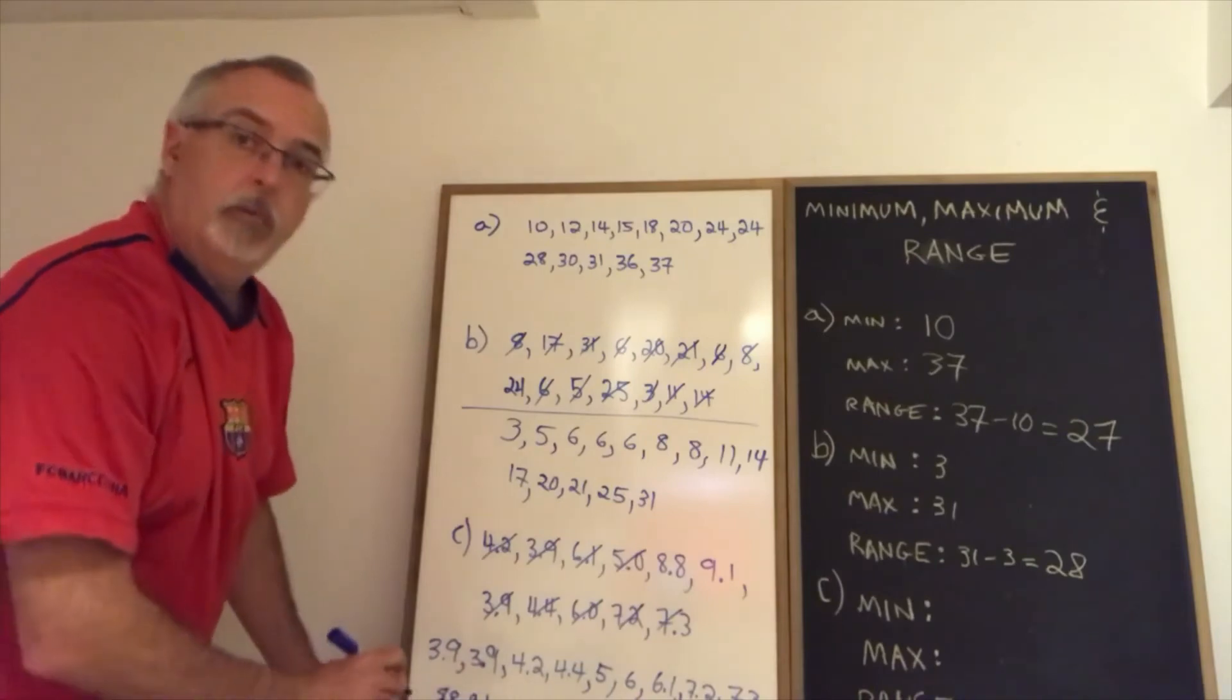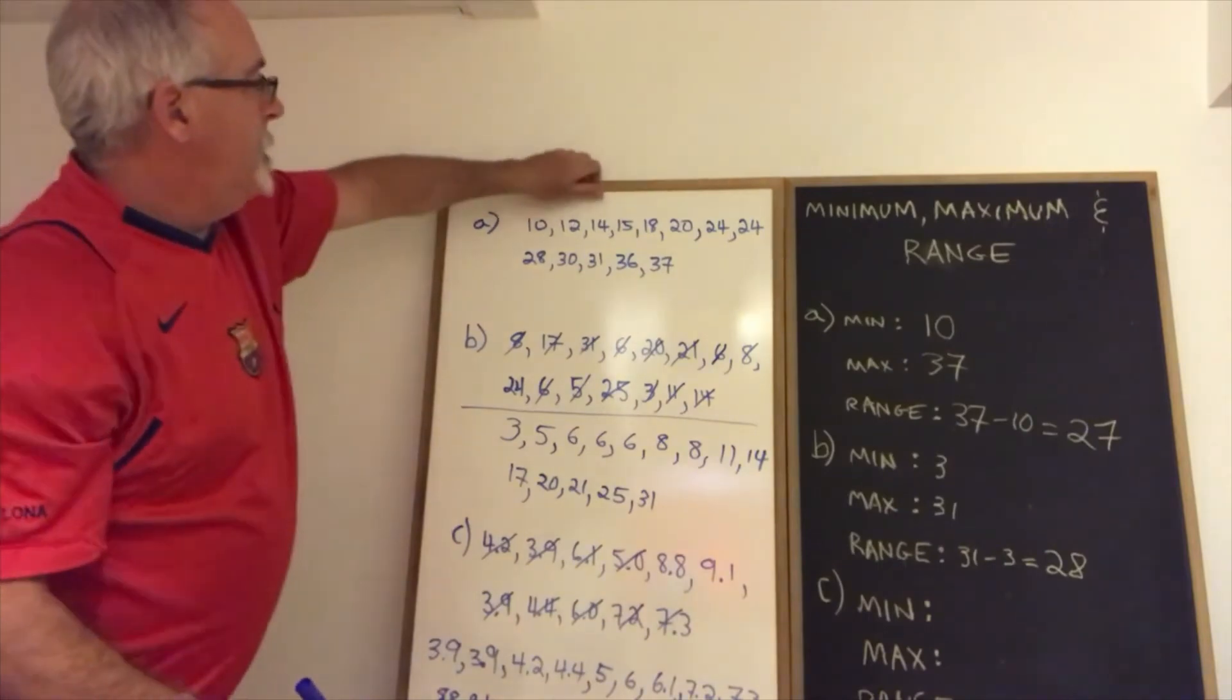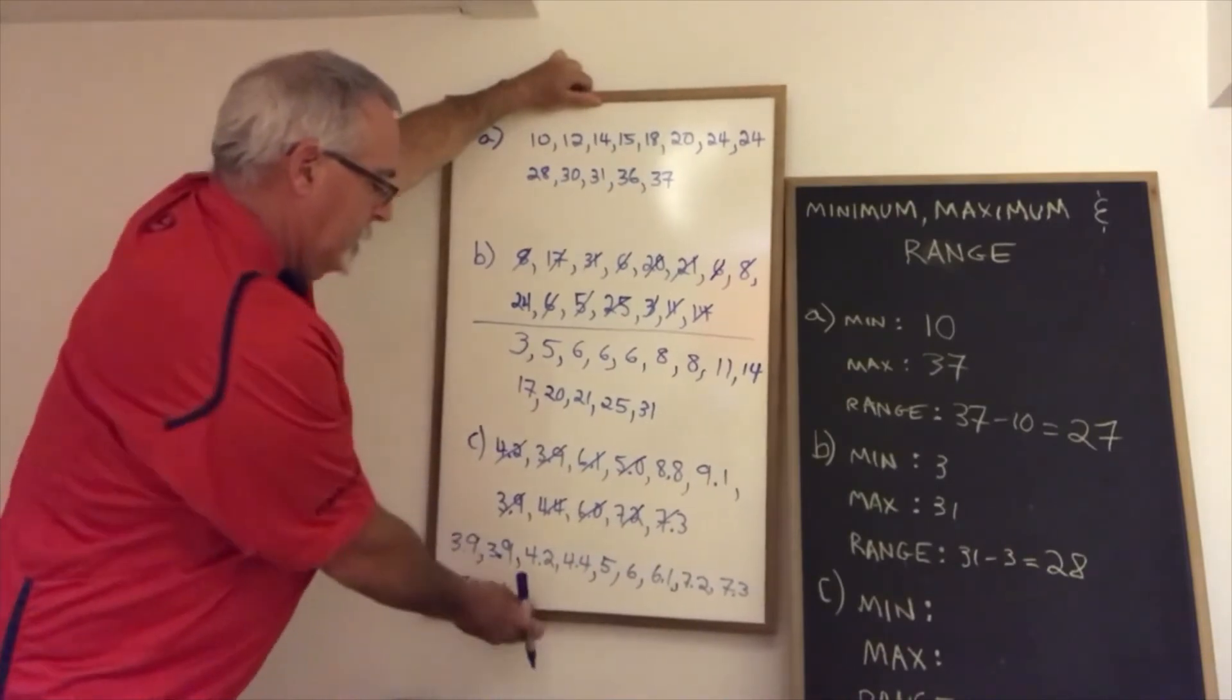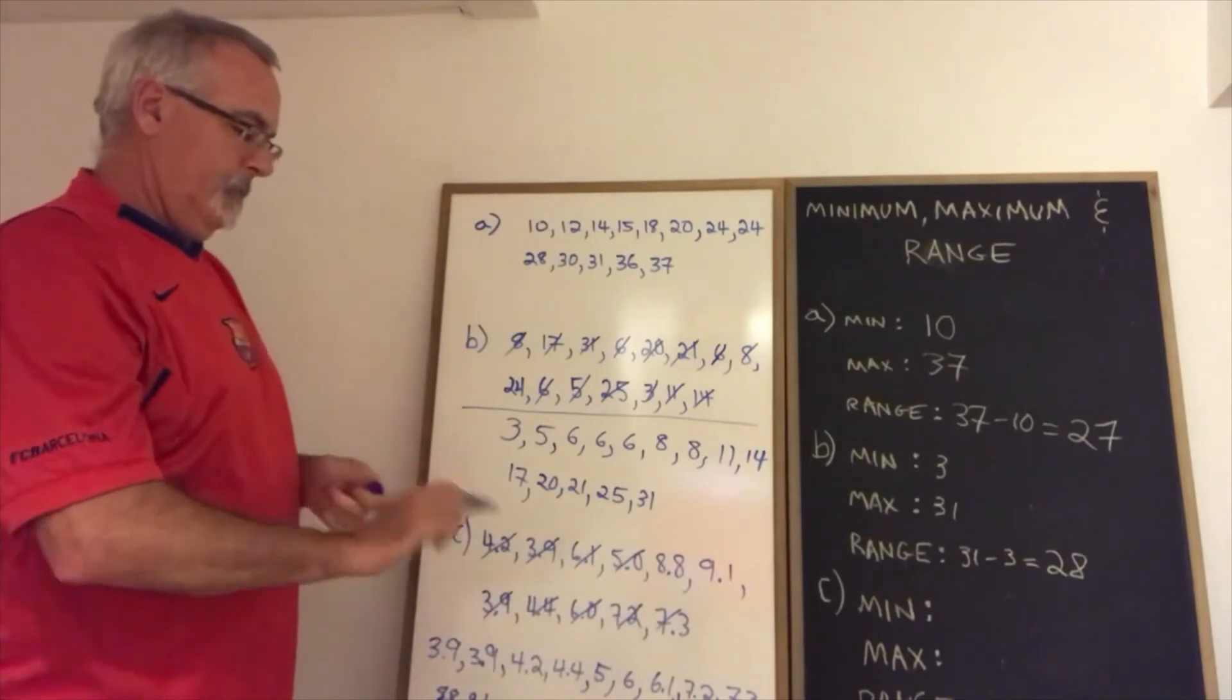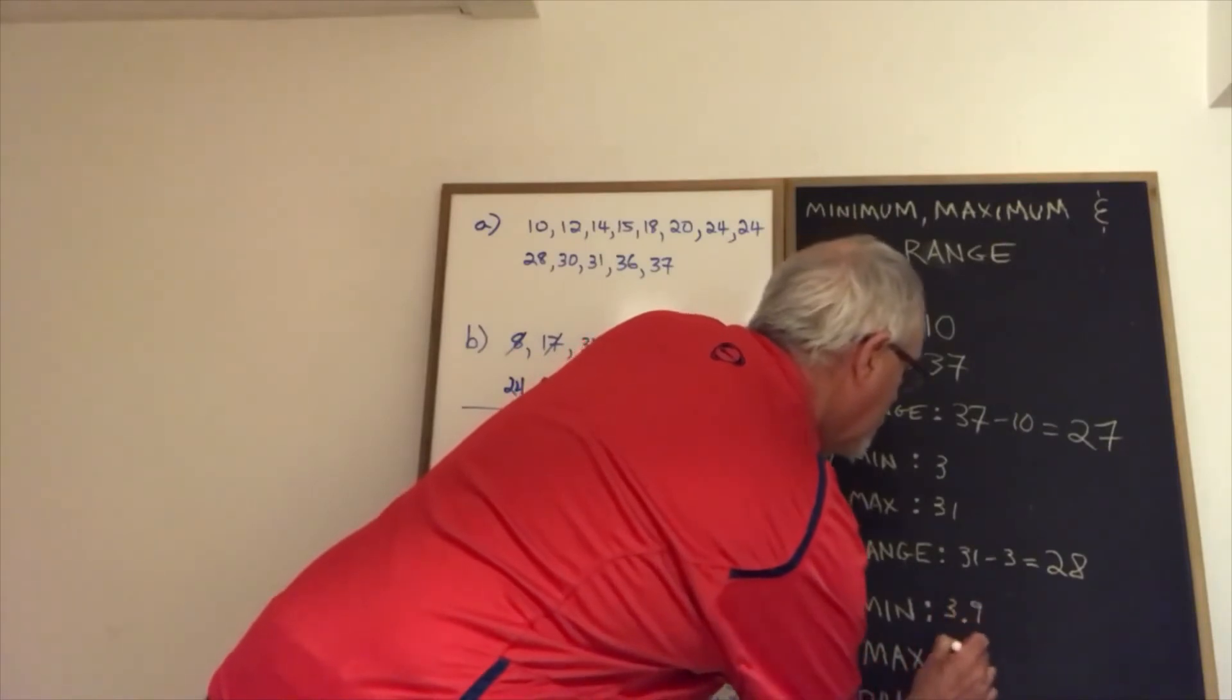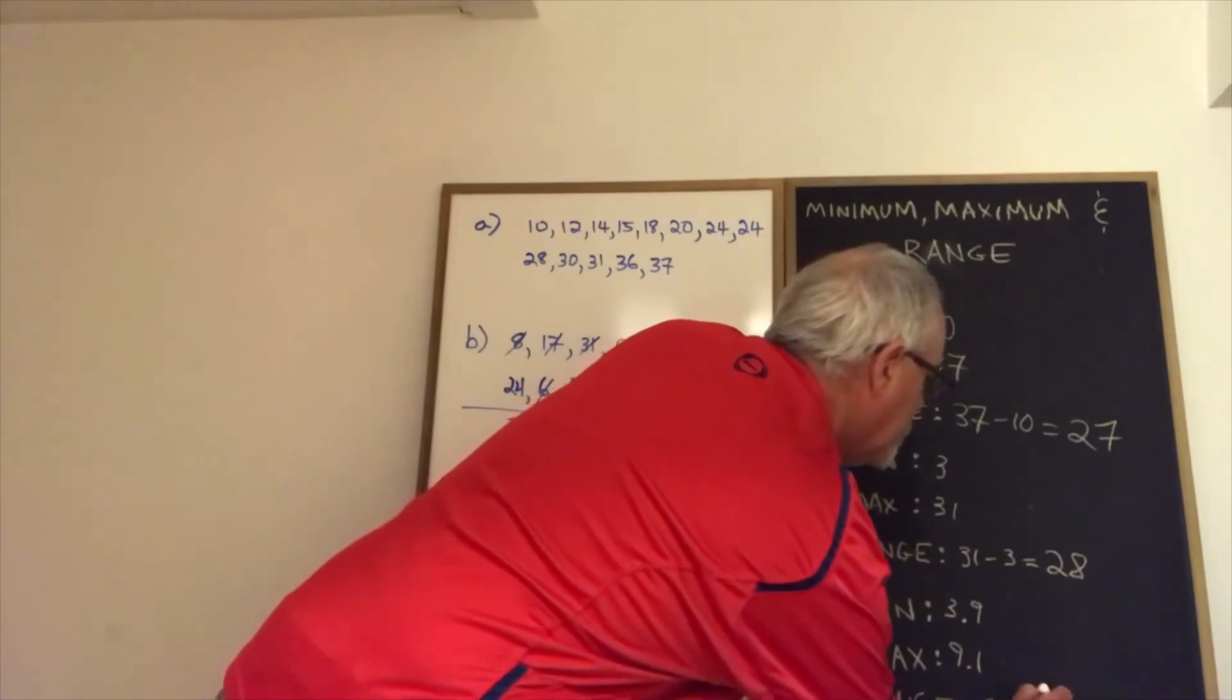And all that's left are 8.8 and 9.1. Very hard to write at the very bottom of the whiteboard. And I don't know how well it can be seen either. So there we go. I have my numbers written in order. The smallest is 3.9. The largest is 9.1. The range is 9.1 minus 3.9.